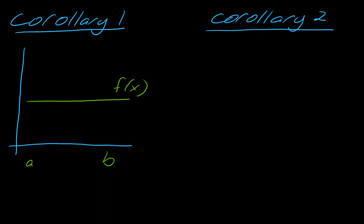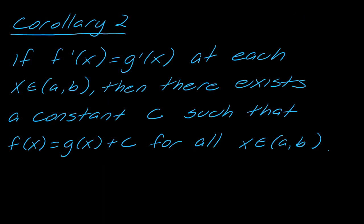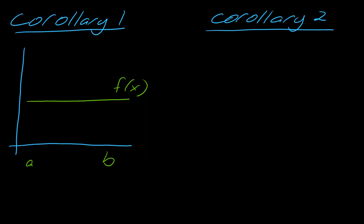Now let's think about the second corollary. It says if f prime of x equals g prime of x at each point x in an interval, then there exists a constant c such that f of x equals g of x plus c for all x in this interval. So let's actually try to think of some derivatives here for a second.